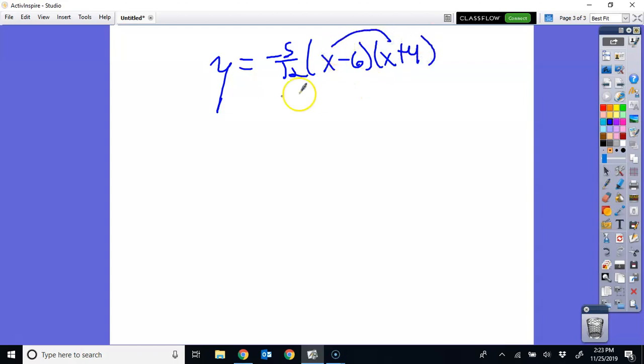You multiply x times x. That is going to give me x squared. x times 4 is 4x. Negative 6 times x is negative 6x. And negative 6 times 4 is negative 24.